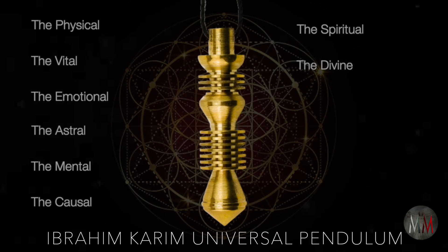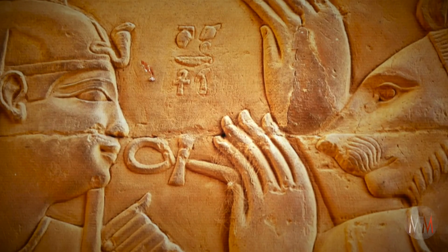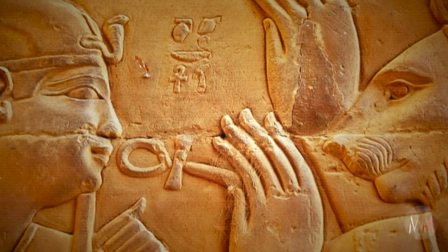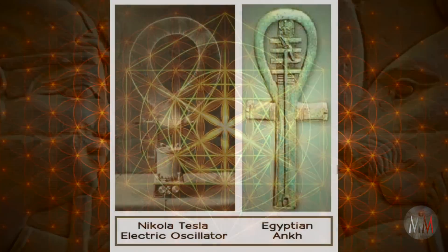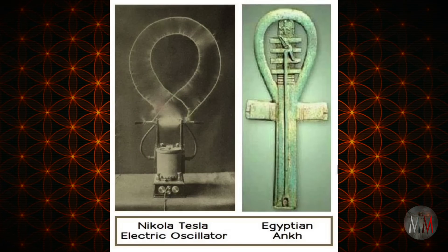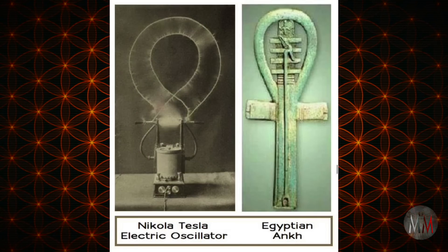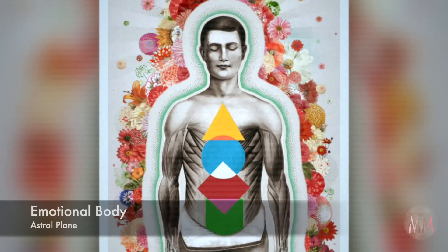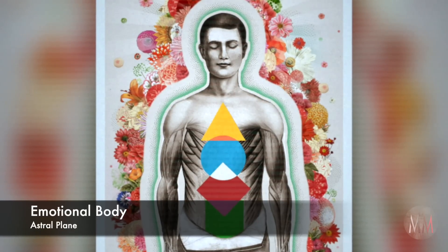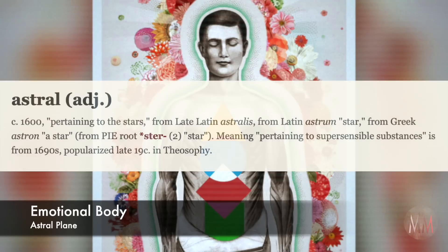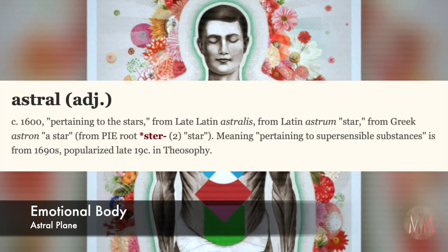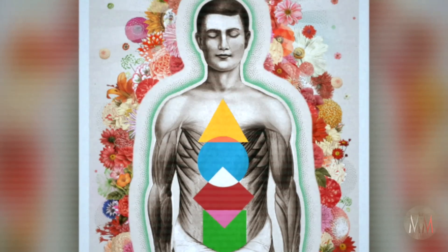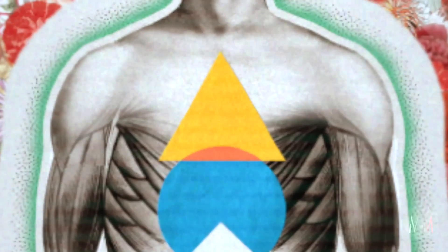This is a form used in the advanced level of biogeometry called the Ibrahim Karim Universal Pendulum, which combines shapes of multiple different plane levels. By using the correct geometric form, the ancient Egyptians understood they could create a direct resonant exchange — like an antenna — based on sacred geometry. Sacred geometry became an antenna to resonate with a particular higher plane. For example, what in the human being is the emotional body or astral plane — 'astral' coming from the root 'aster' meaning star or source of light — the forms that connect to that are the hemisphere or the pyramid.